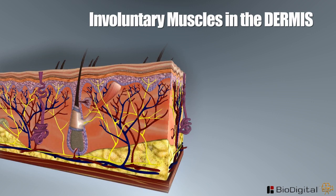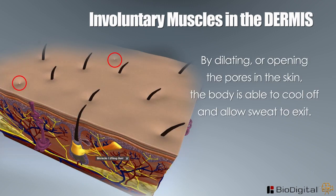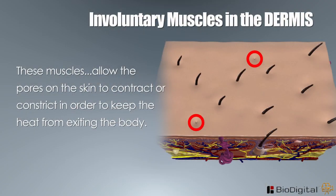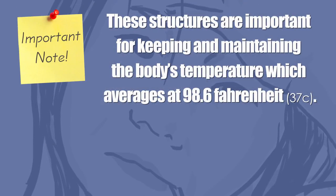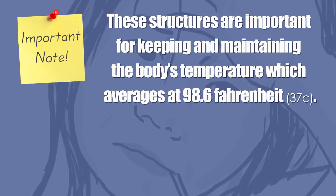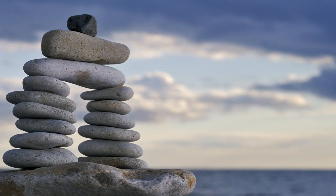Involuntary muscles in the dermis control functions such as lifting hair or opening pores. By dilating or opening the pores, the body is able to cool off and allow sweat to exit. When the body needs to retain heat, these muscles allow the pores to constrict. If it's too cold, the pores can constrict so tightly that they form goosebumps. These structures are important for maintaining the body's temperature, which averages at 98.6 degrees, helping maintain homeostasis.